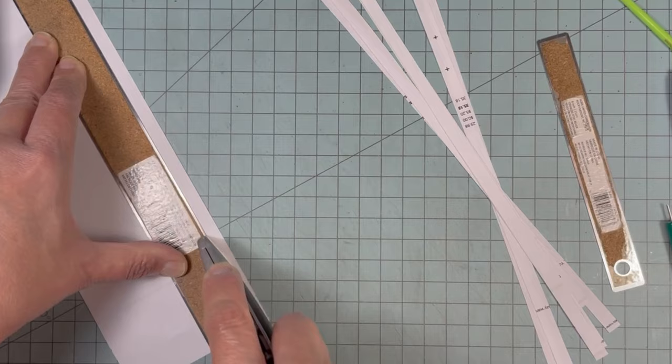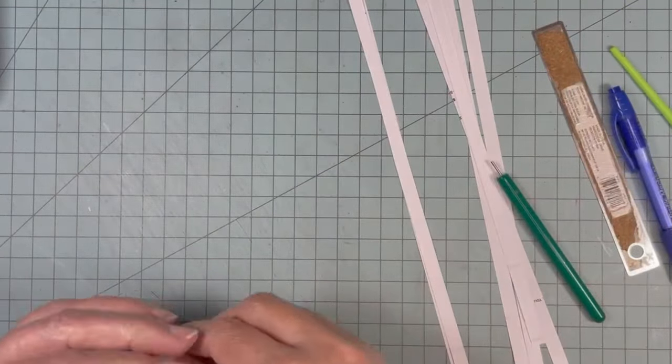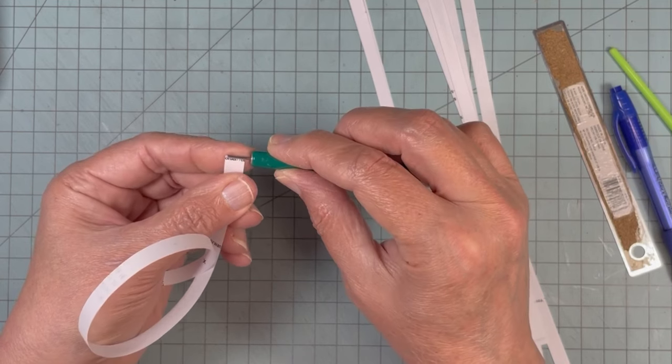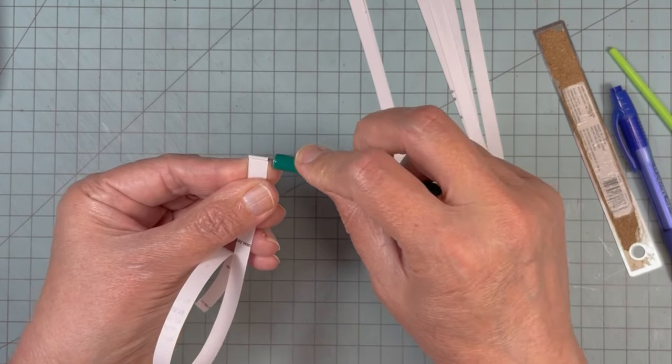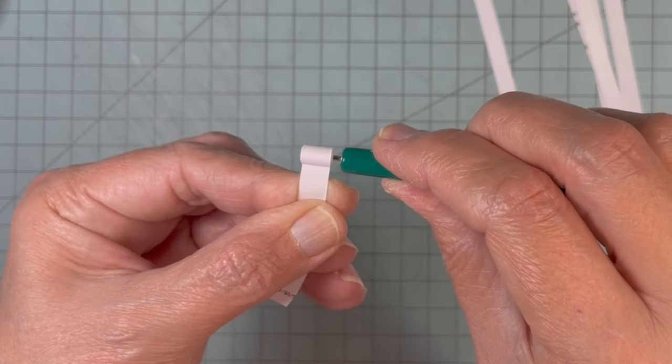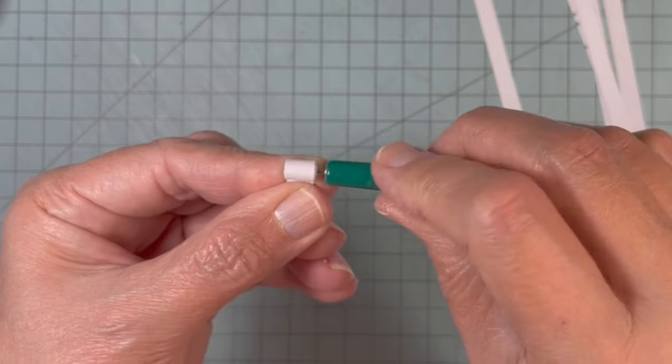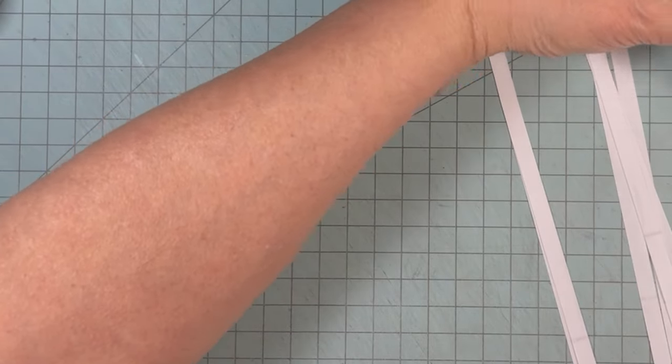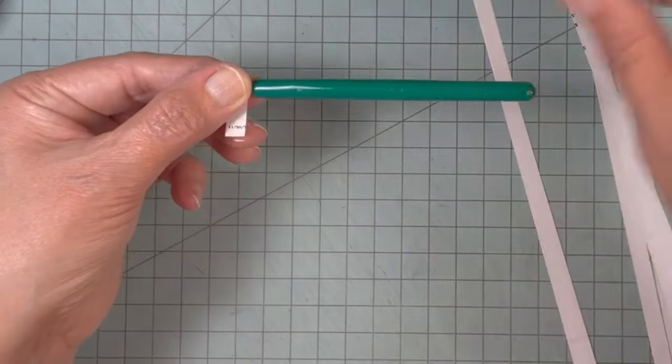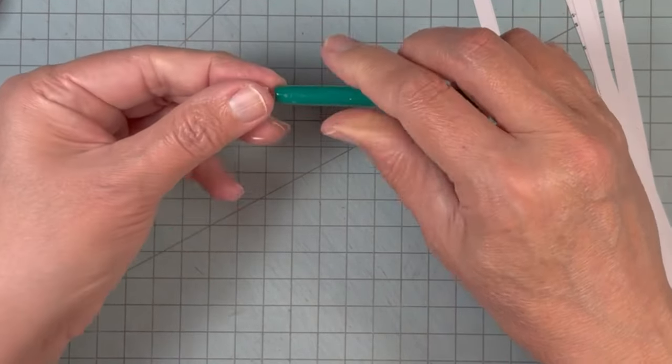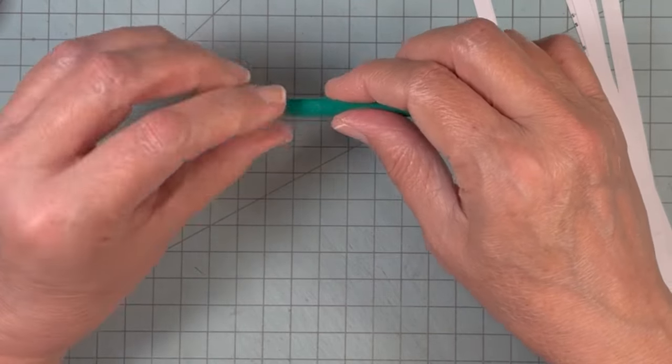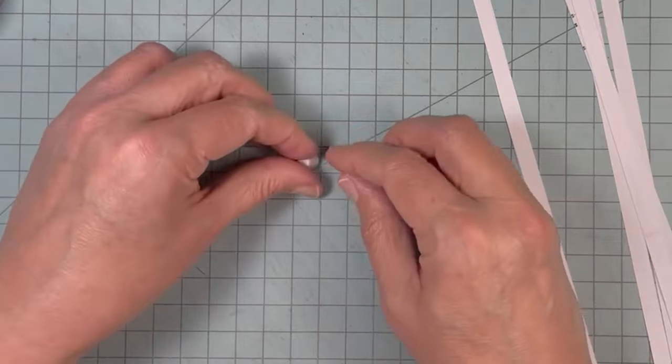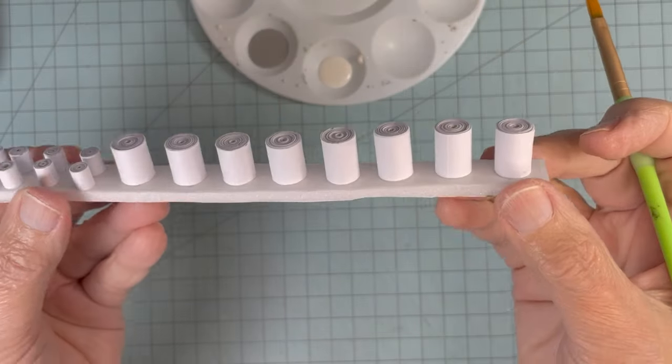I started out cutting some strips the width of the height that I wanted my canned goods to be, and just rolled them up. I made several different sizes.